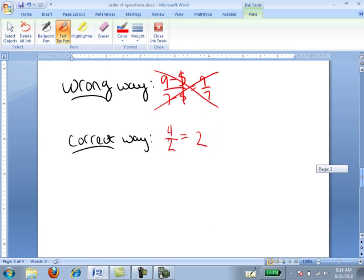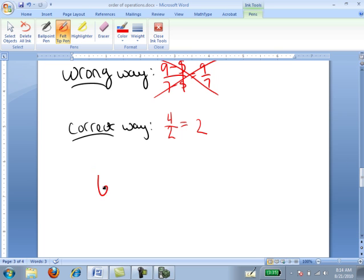As another example, if I had had (6 - 2) / (8 - 4), I can't over here just cancel the 2 over 4 and write 1/2.